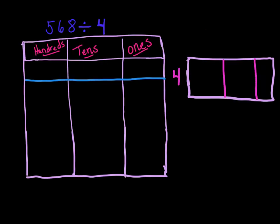In this next problem, 568 divided by 4, we're going to use the place value chart and the area model to find the quotient. So now let's split up 568. How many hundreds do we have? We've got 5.